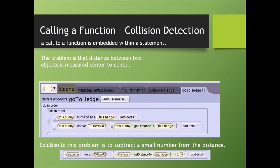Calling a function: collision detection. A call to a function is embedded within a statement. The problem is that the distance between the two objects is measured center to center. Center of the bunny from here to the center of the hedge here.